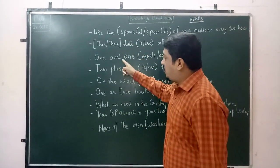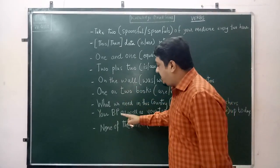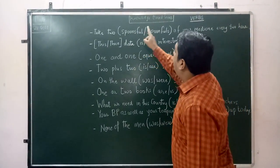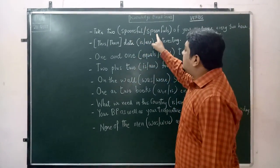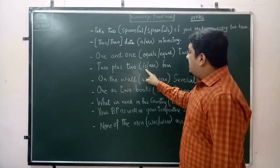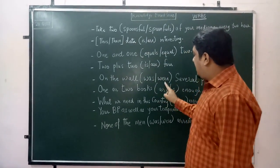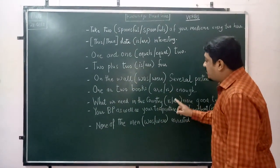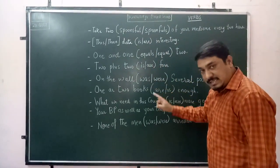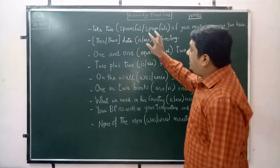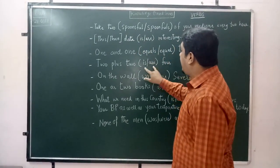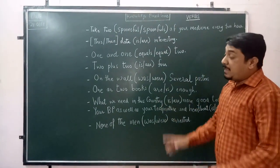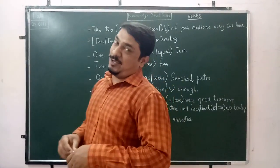We are having 9 sentences here, and every sentence is supported by 2 options. These options are verb options — all of them are verbs. We can call them helping verbs. We will practice which one of the two is the correct verb, and I will give you an explanation for each one.